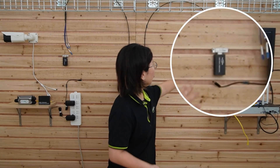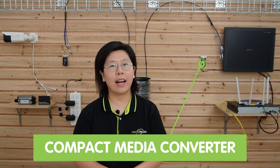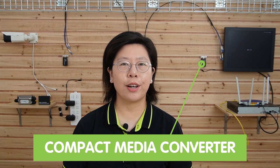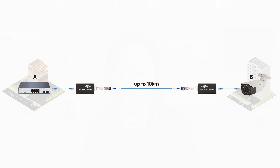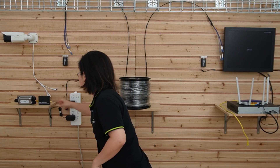Here on the wall, we have the Compact fiber media converter. This is a practical device for fiber-to-ethernet signal conversion for devices in long-distance fiber network systems, and it can supply up to 10 km of fiber optic network between point A and point B. The mini design can fit into challenging spaces to enable more flexible installation.